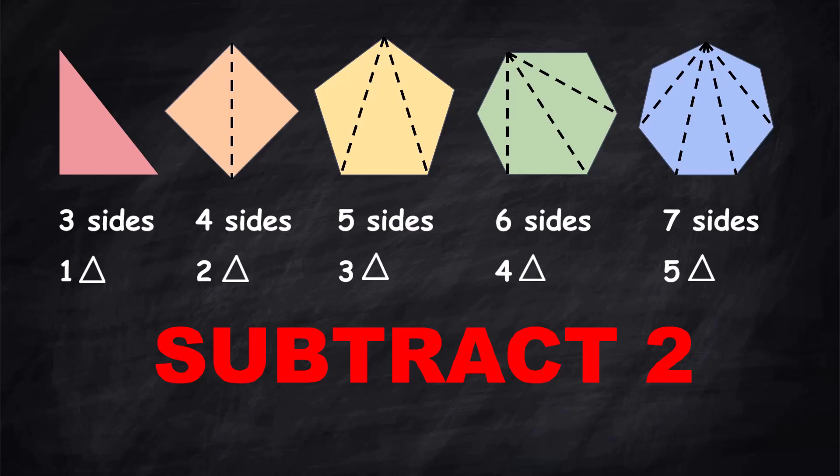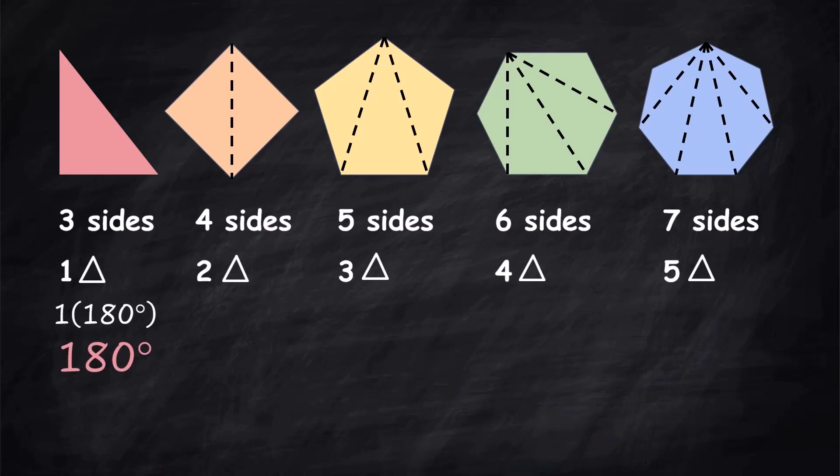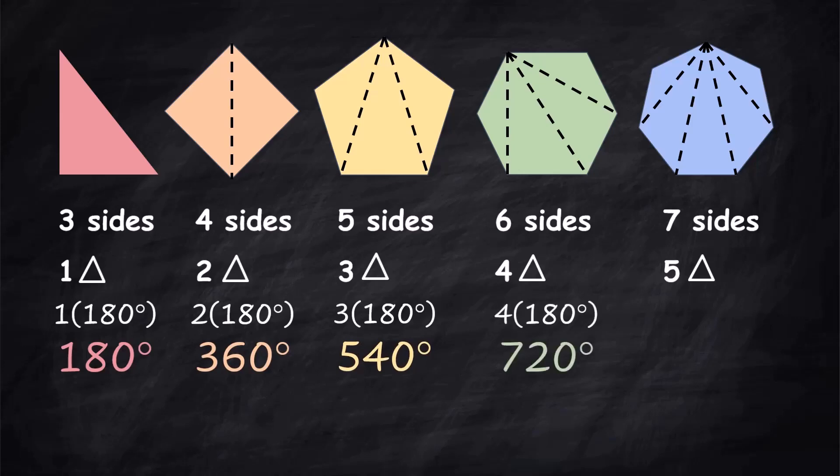And from there you figure out the sum of the internal angles like this. You multiply the number of triangles times 180. Obviously one triangle is one times 180. Two triangles are going to be 360. Five sided figure has three triangles, that's going to be three times 180, that's 540. A six sided figure will have four triangles, four times 180 is 720. Seven sides will have five triangles and five times 180 is 900. And you can keep doing this as long as you keep adding sides.